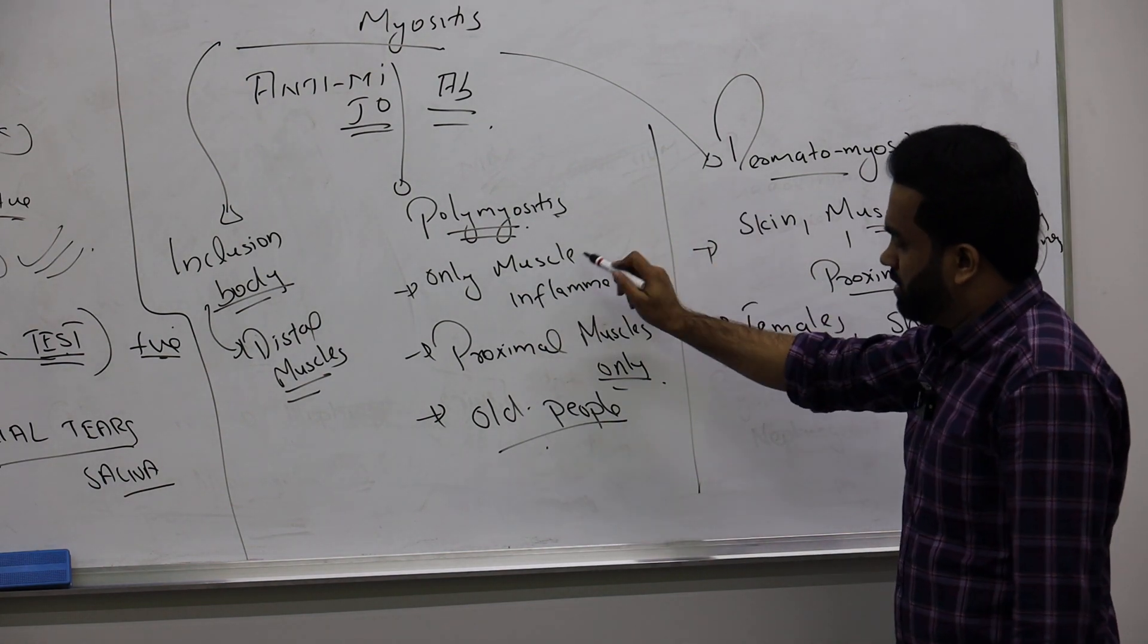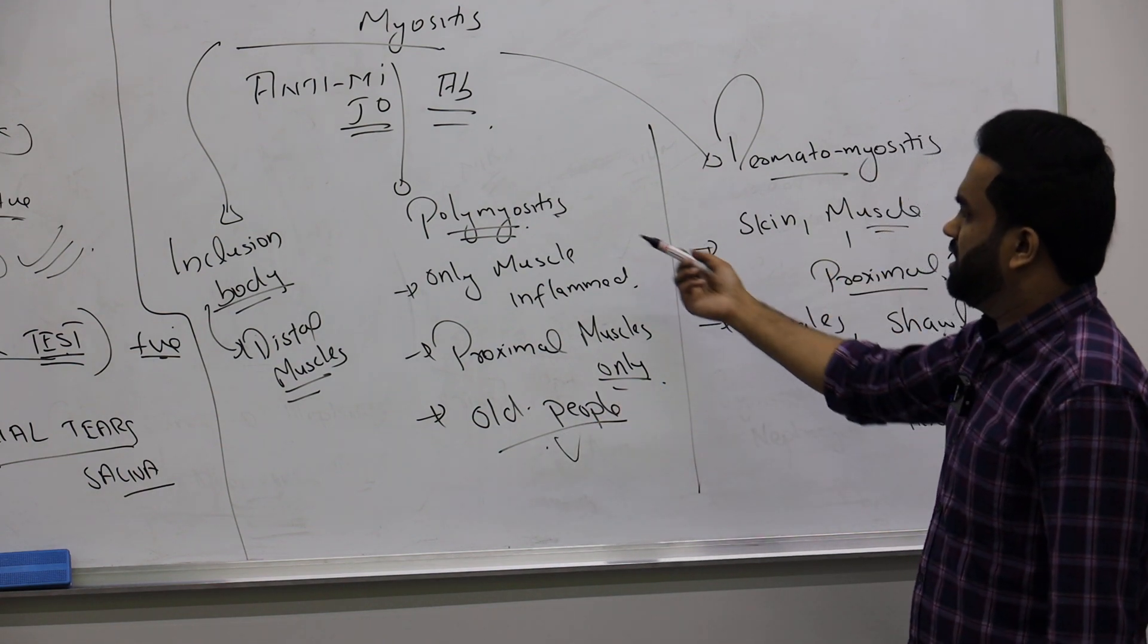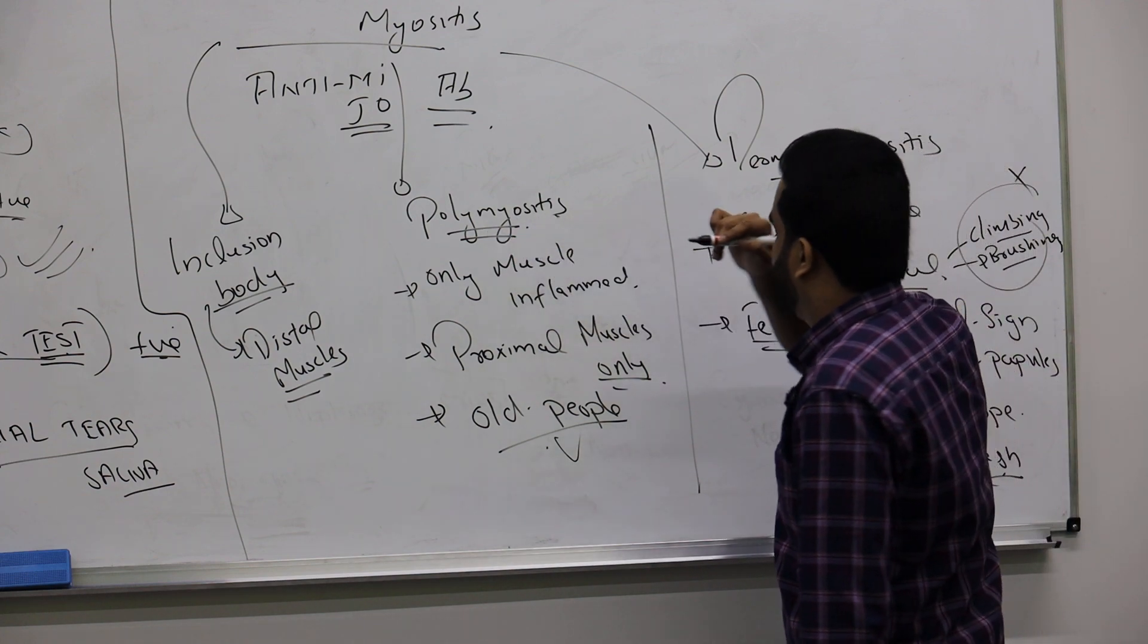So both poly and derma have common features. Because it will be young to old people, proximal muscles are inflamed. Here remember no skin is involved in polymyositis.